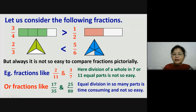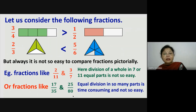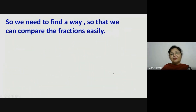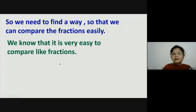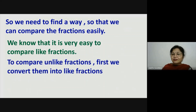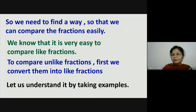You can see that here the denominator is 80, so if we are dividing our whole into 80 parts it will take a lot of time. So we need to find a way to compare fractions easily. We know it is very easy to compare like fractions. So to compare unlike fractions, first we convert them into like fractions. Let us understand this by taking examples.